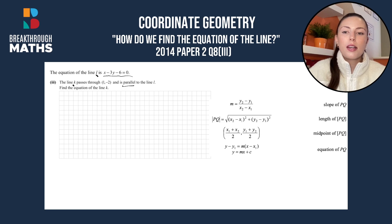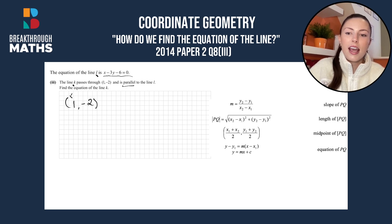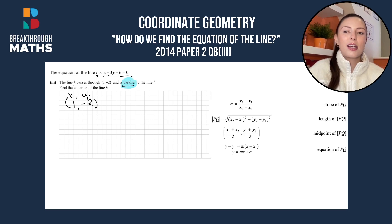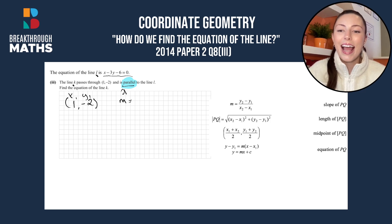The first thing that we know is that we're given a point on line k. This is going to be (1, -2) and this is x1, y1. We're also told it's parallel to the line L and we're given the equation of the line L. What do we know about being parallel to a line? It means that the slope is going to be the same, so we need to find the slope of line L.